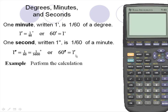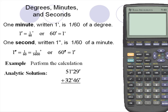Example: perform the calculation. Here's the analytic solution. Let's add 51 degrees 29 minutes to 32 degrees 46 minutes. First, we'll add our minutes: 29 plus 46 is 75 minutes. Next, we'll add our degrees: 51 degrees plus 32 degrees is 83 degrees. Remember our conversion: 60 minutes is equal to one degree.